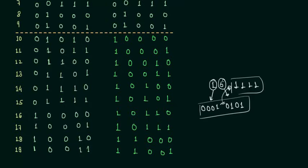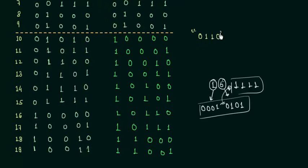We want to convert the binary sum to the BCD sum, so we need the logic for it. As covered in a previous lecture on BCD numbers, whenever the sum is greater than 9 or there is a carry, you have to add 6 — which is 0110 in binary. Once that addition is done, the output will be in BCD. So the question is: when exactly do we add 6?